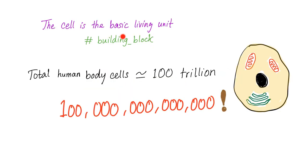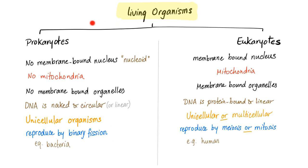The cell is the building block, or the building unit, of your body. Your human body has approximately 100 trillion cells. Living organisms are either prokaryotes or eukaryotes. Eukaryotes, such as you and me, have a membrane-bound nucleus, mitochondria, and membrane-bound organelles. Our DNA is protein-bound and linear. We are, of course, multicellular, but eukaryotes can be unicellular as well.